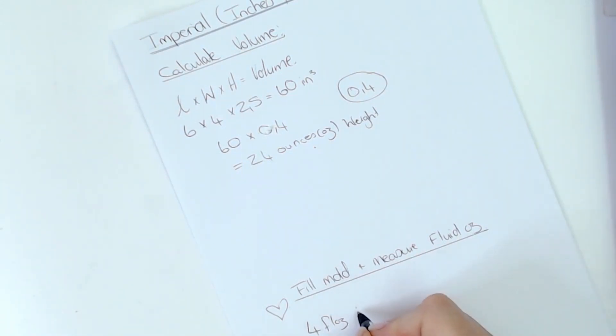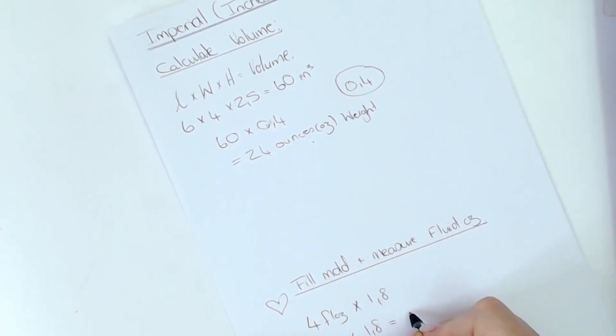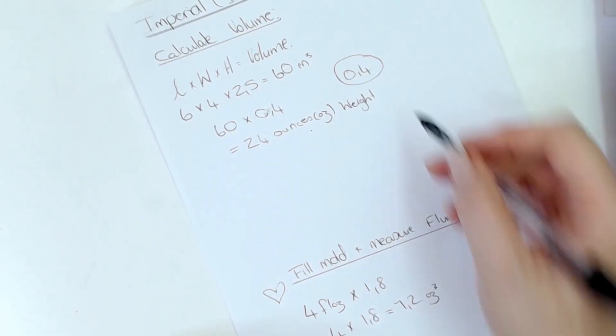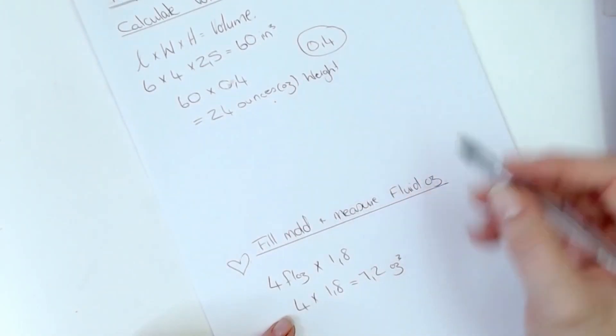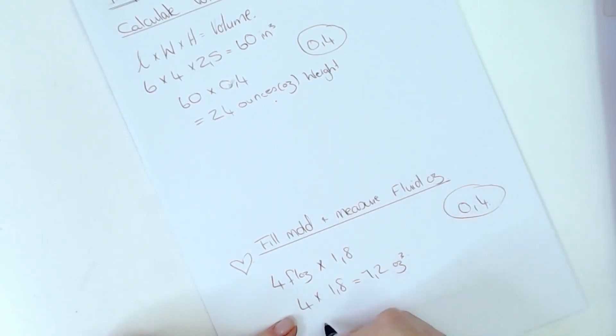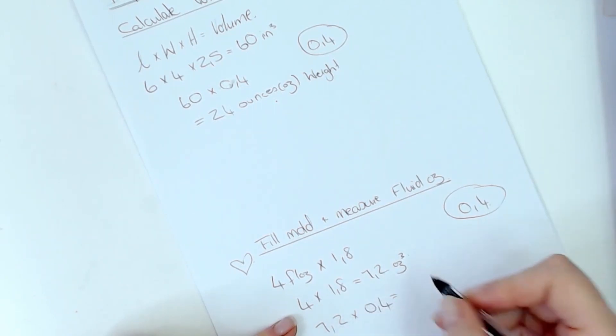And to get to cubic ounces you need to multiply it by one point eight, so it's four times one point eight and that will give you seven point two cubic ounces. Now if you've got your cubic ounces here, what you need to do is you need to multiply it again with this 0.4 factor. So we're going to take the seven point two cubic ounces times 0.4, and that will give you two point eight eight ounces of oil that you're going to need to fill one of these little cavities.